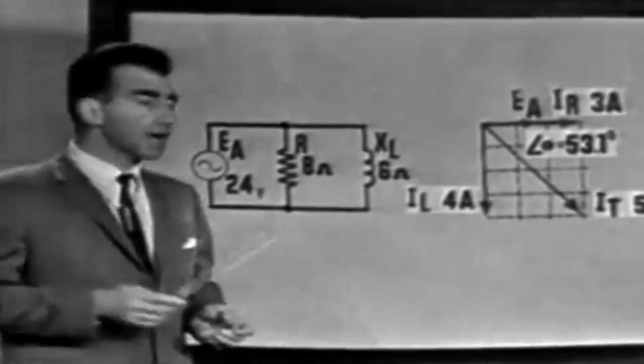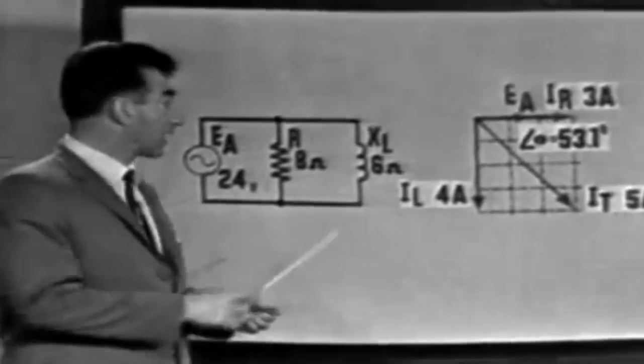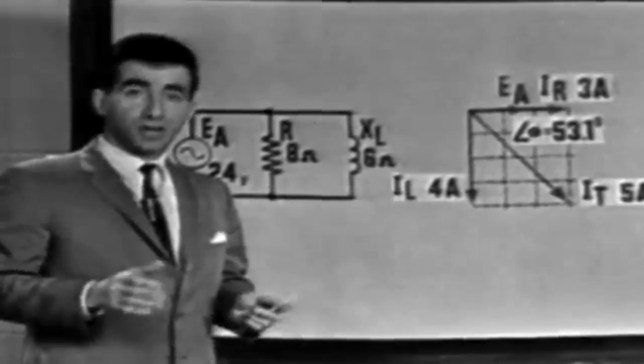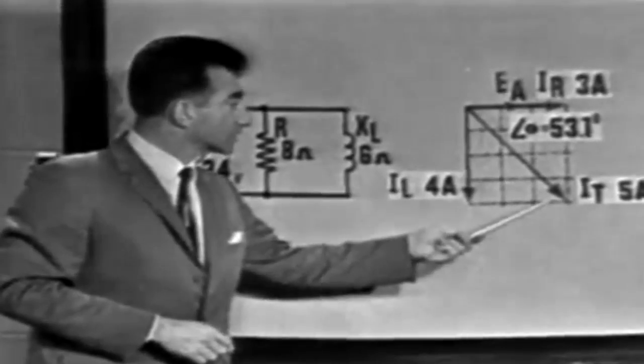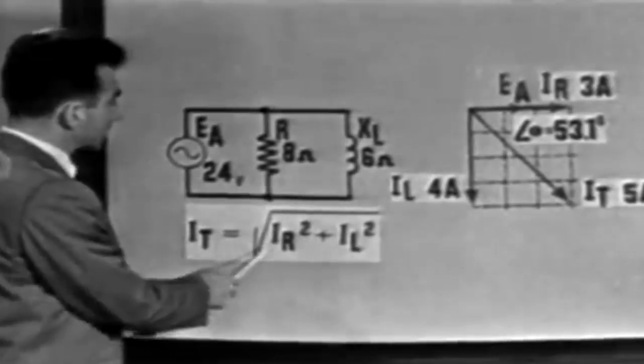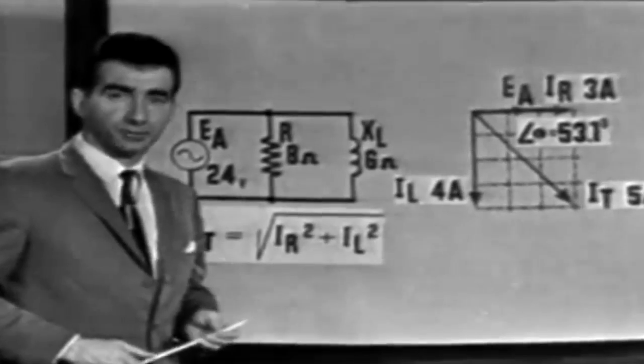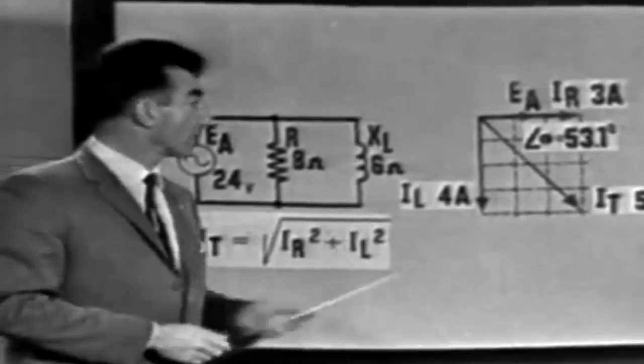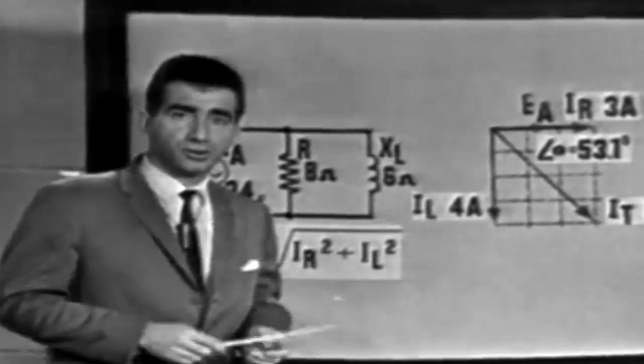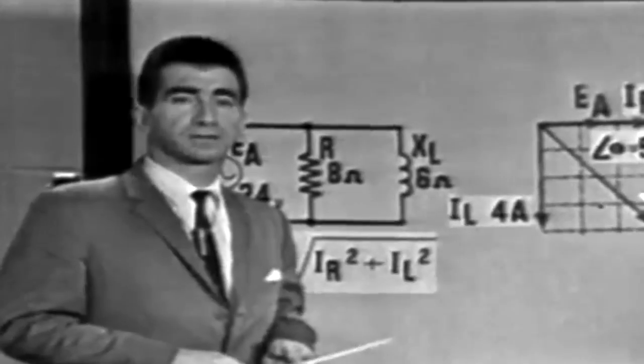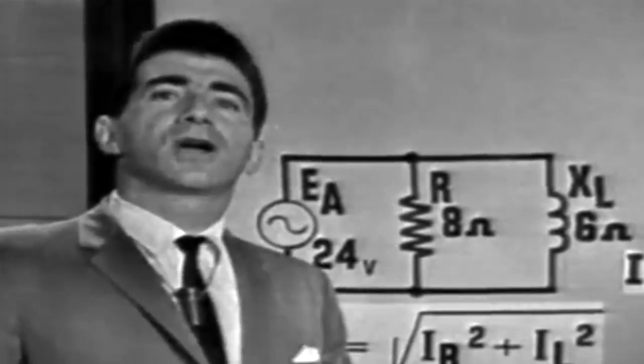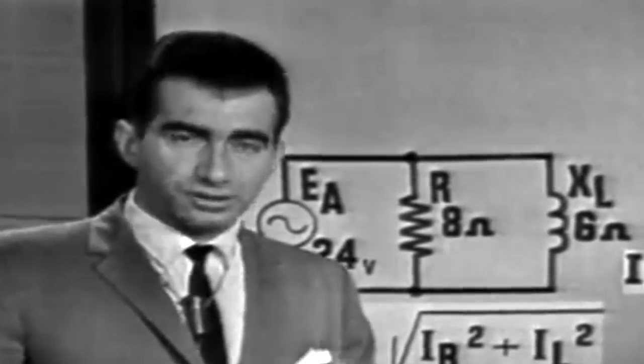Well, let's recap briefly. EA is the reference vector. And IL and IR are used to show the phase differences in the circuit and may be determined by applying Ohm's law. IT can be measured from the graph or calculated from the formula, the Pythagorean theorem, IT is equal to the square root of IR squared plus IL squared, which of course is a much more accurate method. Angle theta may be measured from the graph also, or found by using the trig tables. Now, which trig function you use will be determined by exactly what you want to know about the circuit. Total impedance is found simply by applying Ohm's law. Well, I hope that you have a better understanding of parallel RL circuits after this brief review. Good luck.